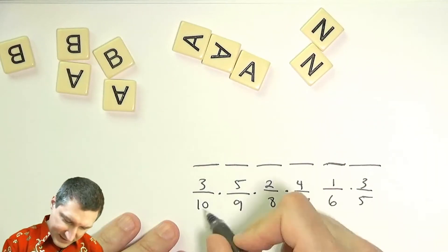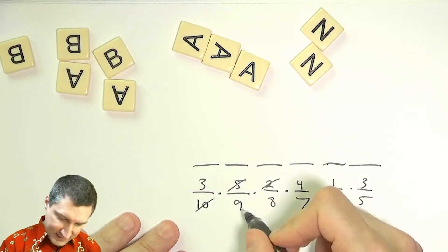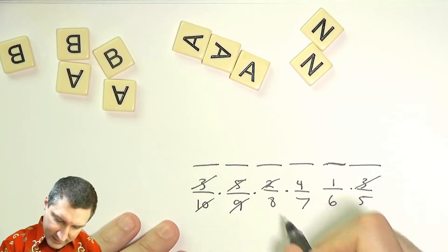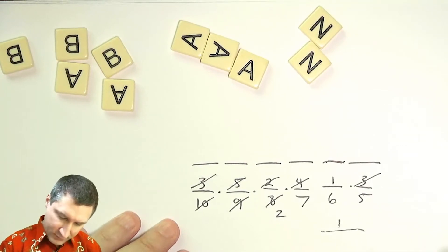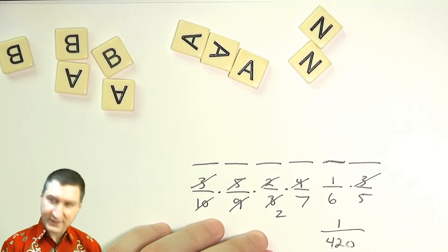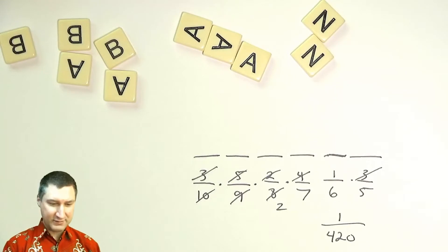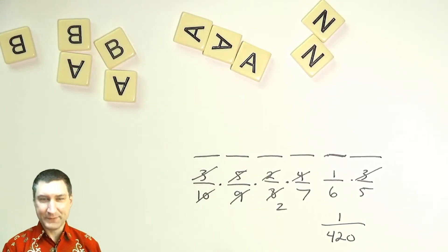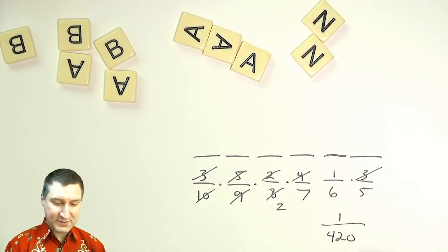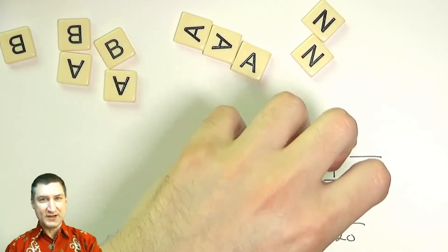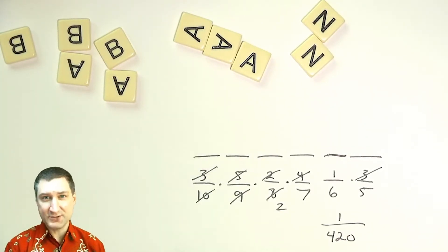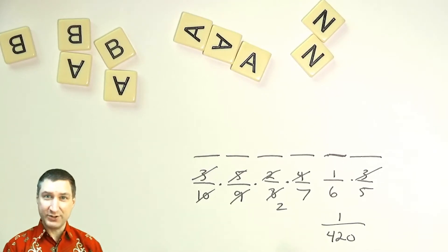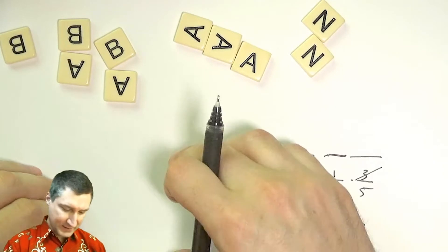After doing a bunch of cancellations, I find the probability is 1/420. That's the probability of spelling 'banana' in order. Now a different question: if the monkey grabs a handful of six tiles, what's the probability those tiles can be rearranged to spell 'banana'?